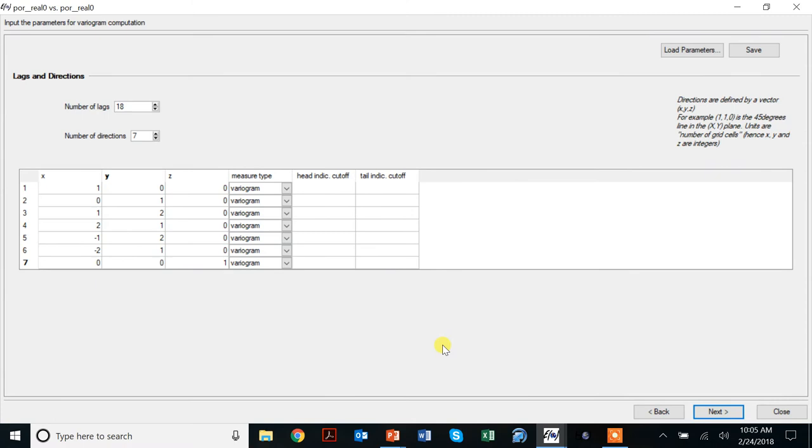As before, we'll calculate the variogram. I've already put up that window and input some lags and directions. Given what I observed in the dataset, I calculate six directions in the horizontal: 0, 30 degrees, 60 degrees, 90 degrees, minus 30, minus 60, which is equivalent to 150 and 120.